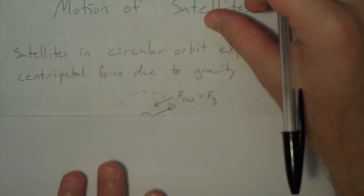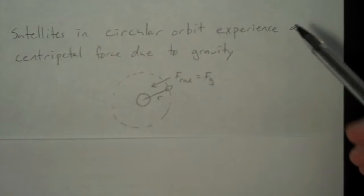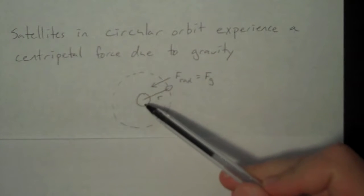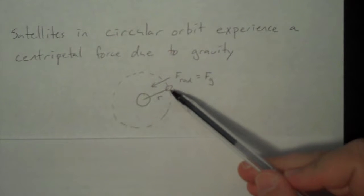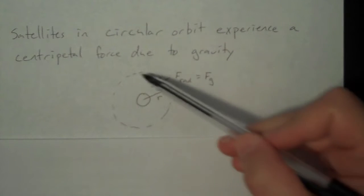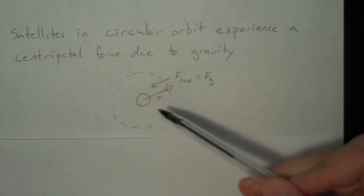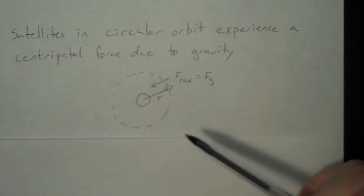So the picture is the following. So here is the Earth, and here is your satellite, and it is going about in a perfect circle, and it's a distance r from the center.